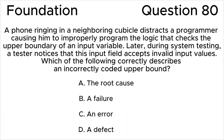A following in a neighboring cubicle distracts a programmer, causing him to improperly program the logic that checks the upper boundary of an input variable. Later, during system testing, a tester notices that this input field accepts invalid input values. Which of the following correctly describes an incorrectly coded upper bound?